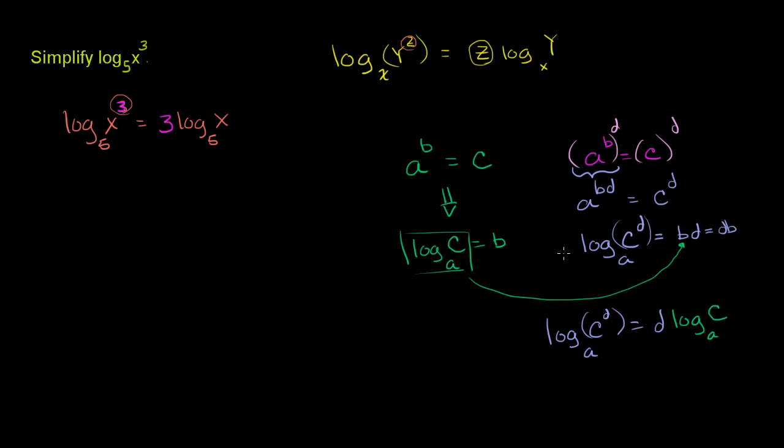There you have it. We just derived this property. Log base a of c to the d-th is the same as d times log base a of c, which we applied earlier.